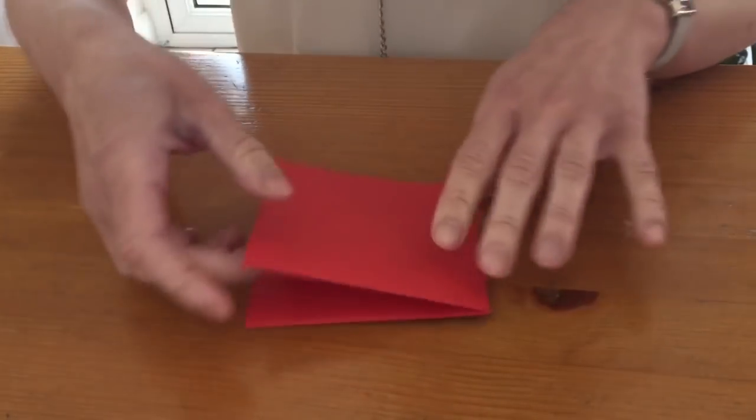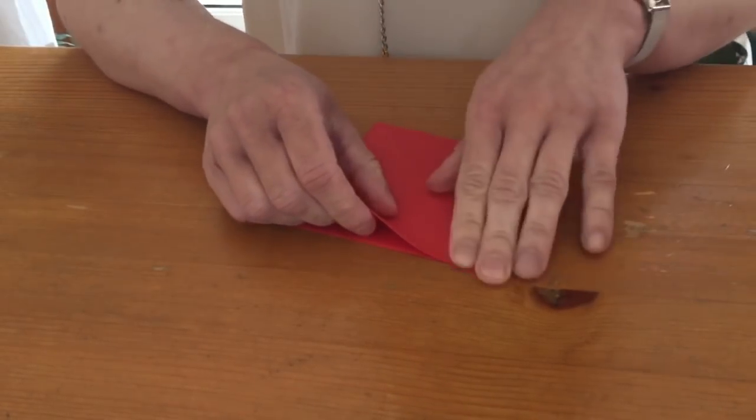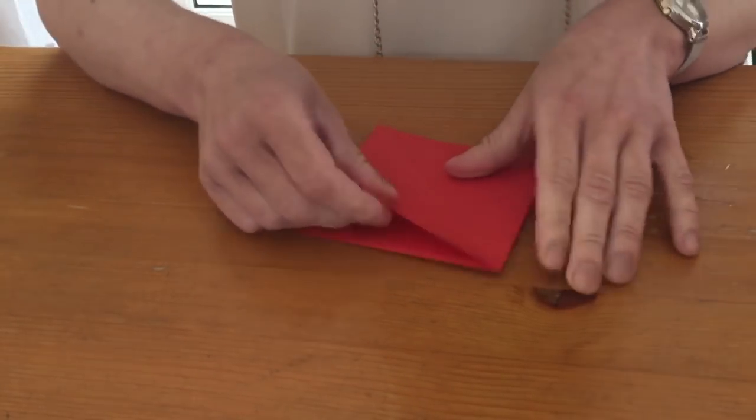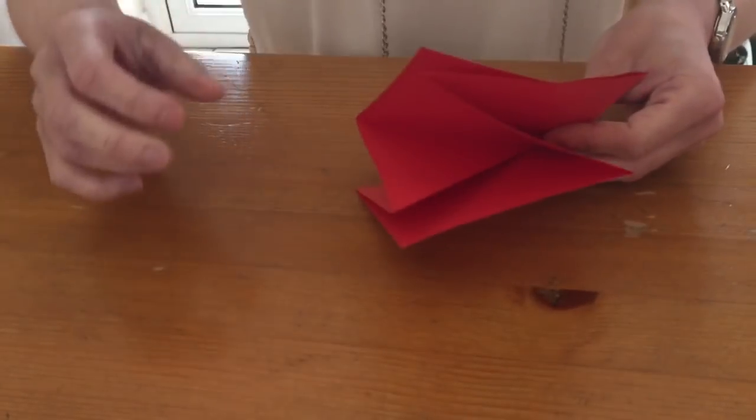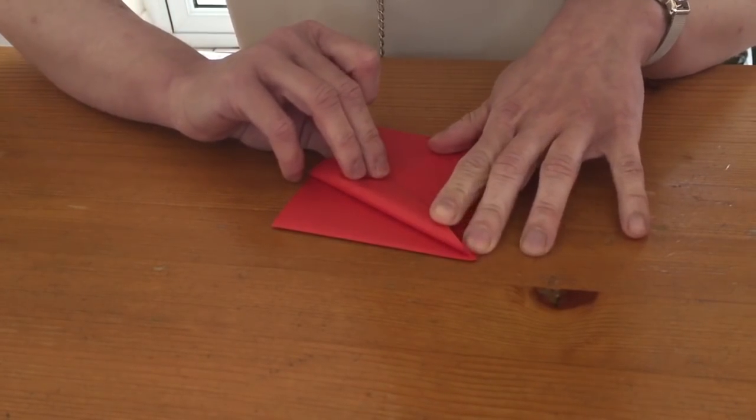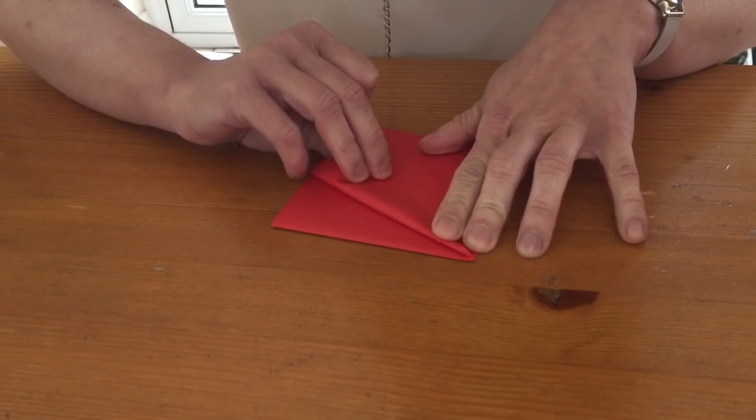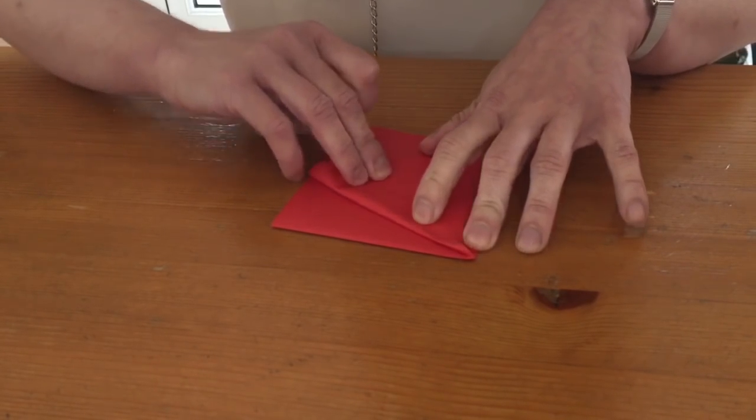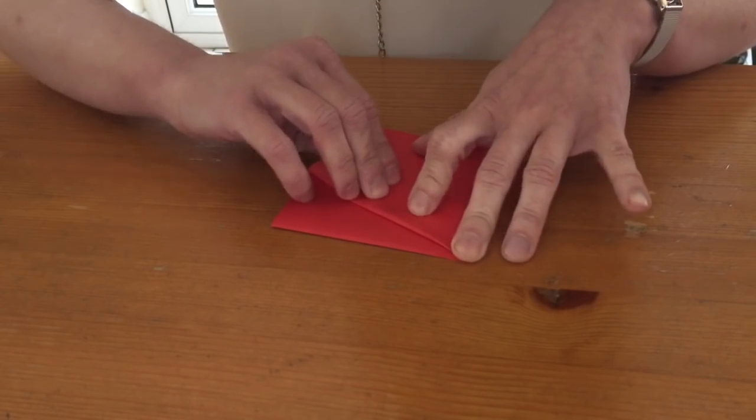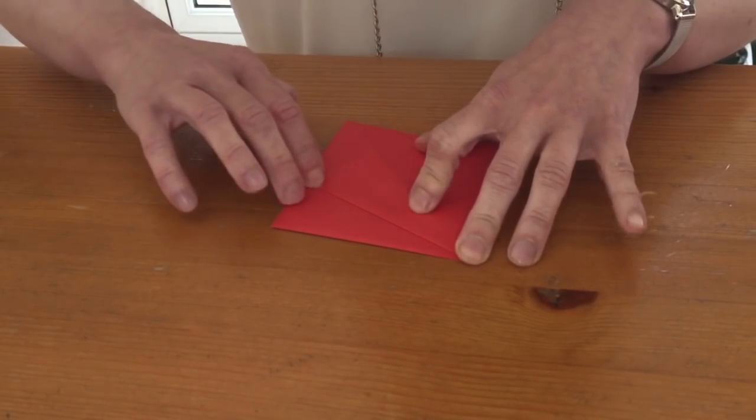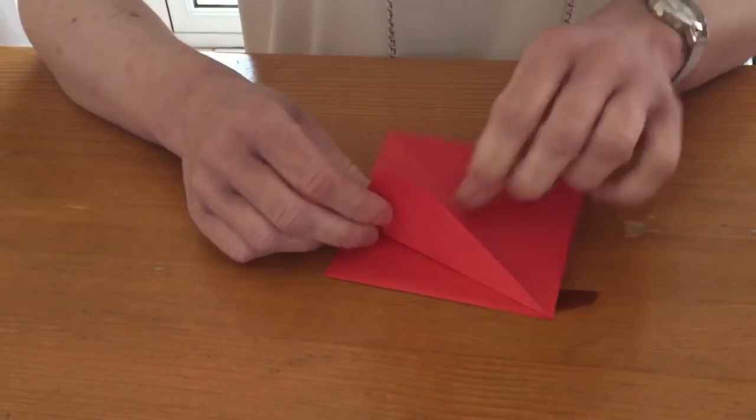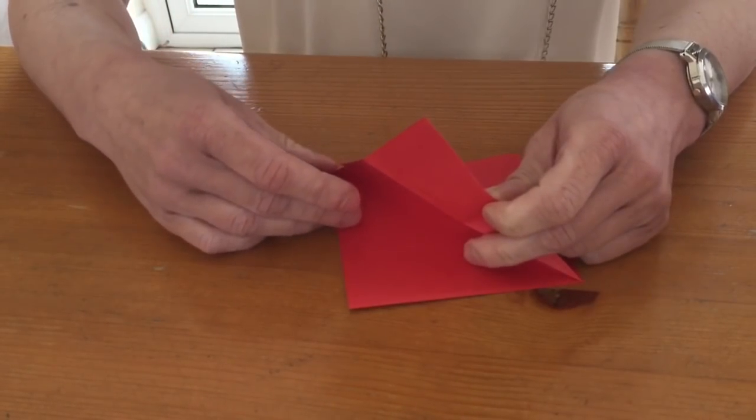So what you want to do to make things easier is just fold this. So this is the closed end and this is the open end. You want to fold down from the closed end, the non-open end. Just like that, make sure everything is nice and equal. Press nice and firmly. And then what you want to do is open this little pocket up.